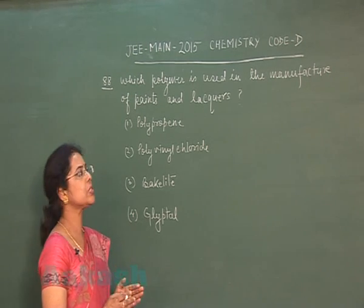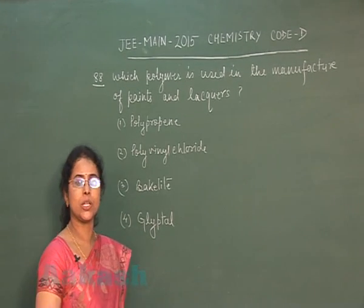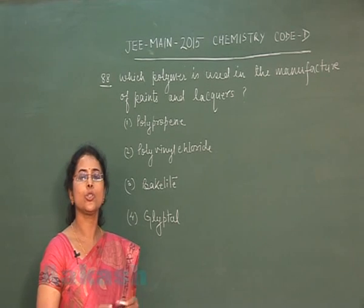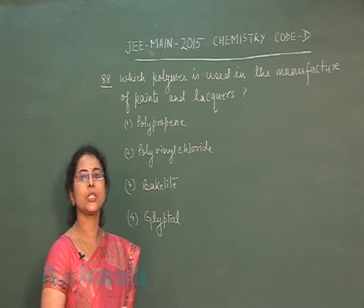Options based on polymer's properties. First option is polypropene. Polypropene means the polymer formed by polymerization of propene. This compound is used as plastic.